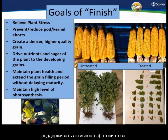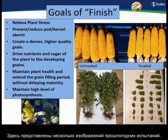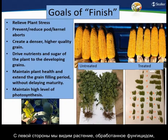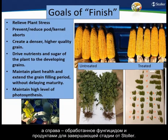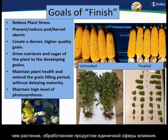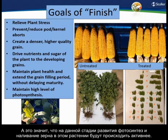Looking at trial photos from last year: probably the end-of-season disease control is shown as well as anything in the bottom photo. On the left you have a plant treated with a fungicide; on the right, a plant treated with a Stoller finishing program along with a fungicide. That's single mode versus about four modes of plant health action — and there's a significant improvement in overall plant health, better photosynthesis, and better grain fill through the later part of the season.